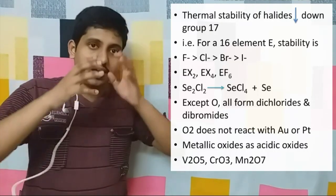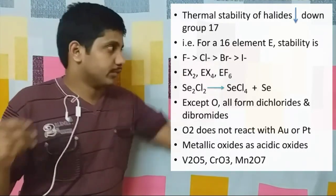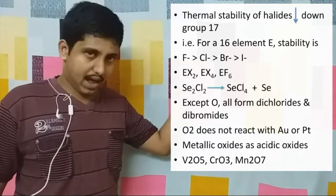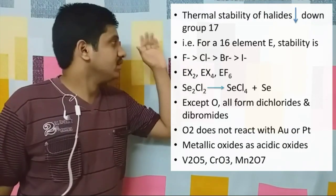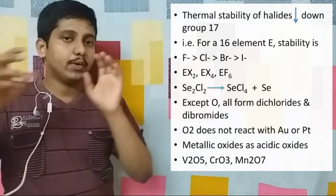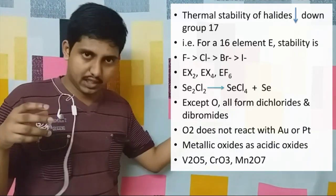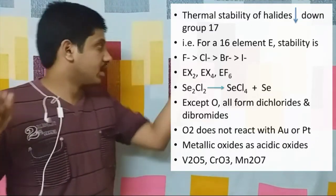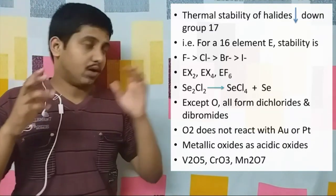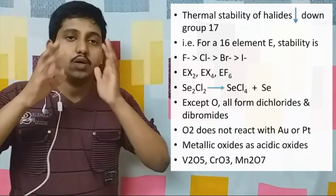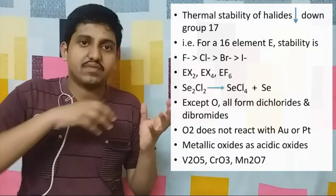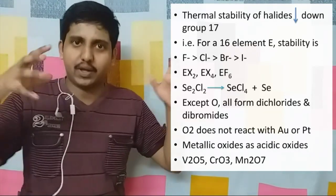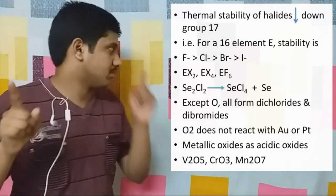For similar fluorides — taking EX2 for example — the stability decreases as fluorides greater than chlorides greater than bromides greater than iodides. So EF2 will be more stable than ECl2. That thermal stability order is very important. Next, regarding SF6: it has extra stability because of steric reasons — that is, crowding. Due to steric reasons, SF6 has extra stability. You must remember that point.